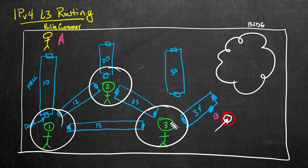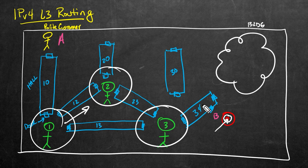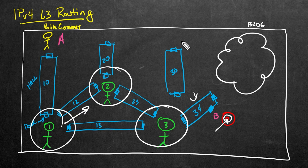So in order for that package from this polite customer to be delivered correctly all the way through the building — being handed off from employee to employee — these employees would need information or instructions on how to forward it. Let's imagine we gave employee one instructions that for packages needing to go to hallway 34, just hand it over to employee two. Another example: if we need to forward to hall 30, we could also tell employee one to forward it to employee two. And for hallway 20, we could say: for hallway 20, also forward it to employee two.